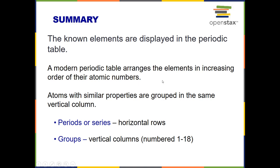Alright, so in summary, all the known elements are displayed in the periodic table, and all of those elements are arranged in increasing order of atomic number. Atoms with similar properties are grouped in the same vertical column, and we call those groups. We have 18 numbered vertical columns or groups. And finally, periods or series, those are the horizontal rows on the periodic table.